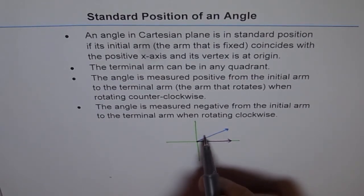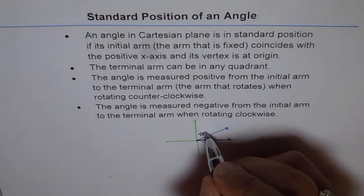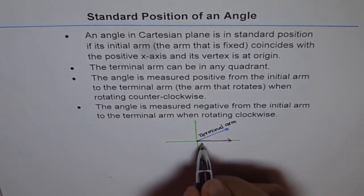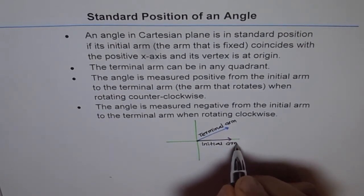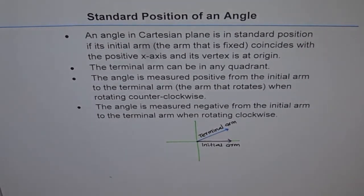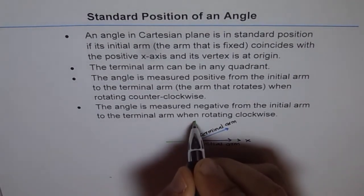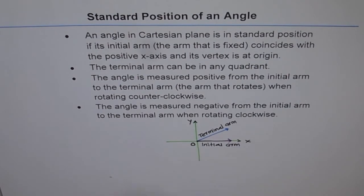If the ray rotates counterclockwise and comes to a new position, that new position is called the terminal arm. The terminal arm is the one which moves, and the initial arm is the one which does not move — it is fixed, and we call that the starting position. If the initial arm coincides with the x-axis and starts at the origin — meaning the vertex of the angle is at position (0, 0) — then we say that the angle formed is in standard position.